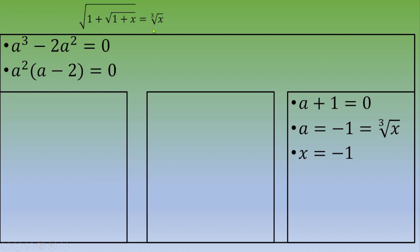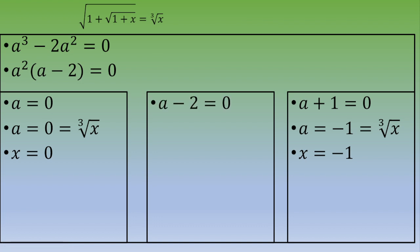We factor out a squared: a squared times (a minus 2) equals 0. This gives two cases. Case 1: a equals 0, and since a equals the cubic root of x, we get x equals 0. Case 2: a minus 2 equals 0, so a equals 2, and since a equals the cubic root of x, we get x equals 8.